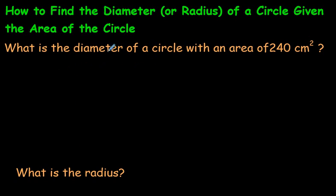What is the diameter of a circle with an area of 240 centimeters squared? Remember the squared is used as a symbol when we're talking about area. It could be inches squared, feet squared, meters squared, and so on.